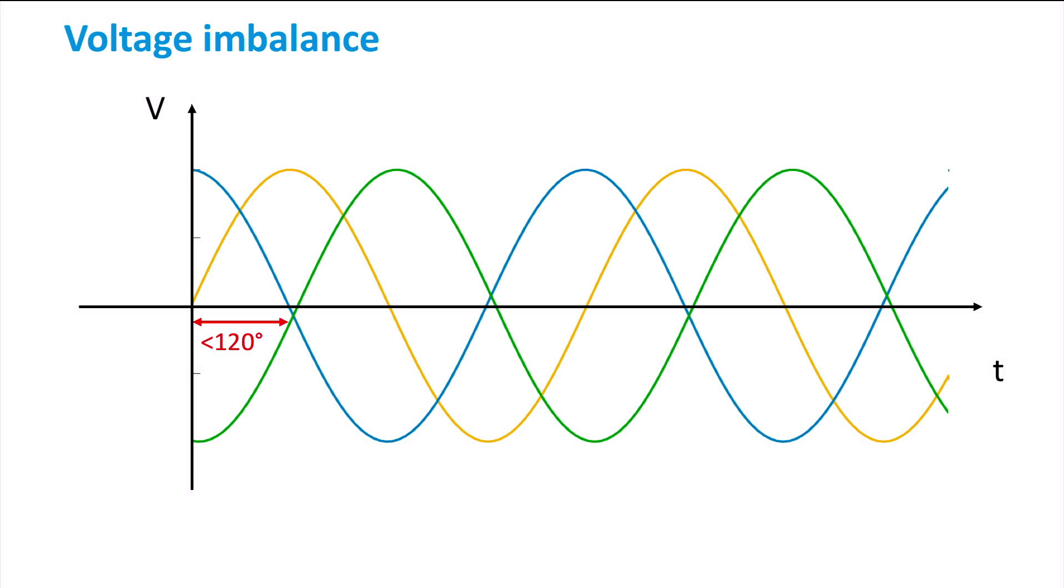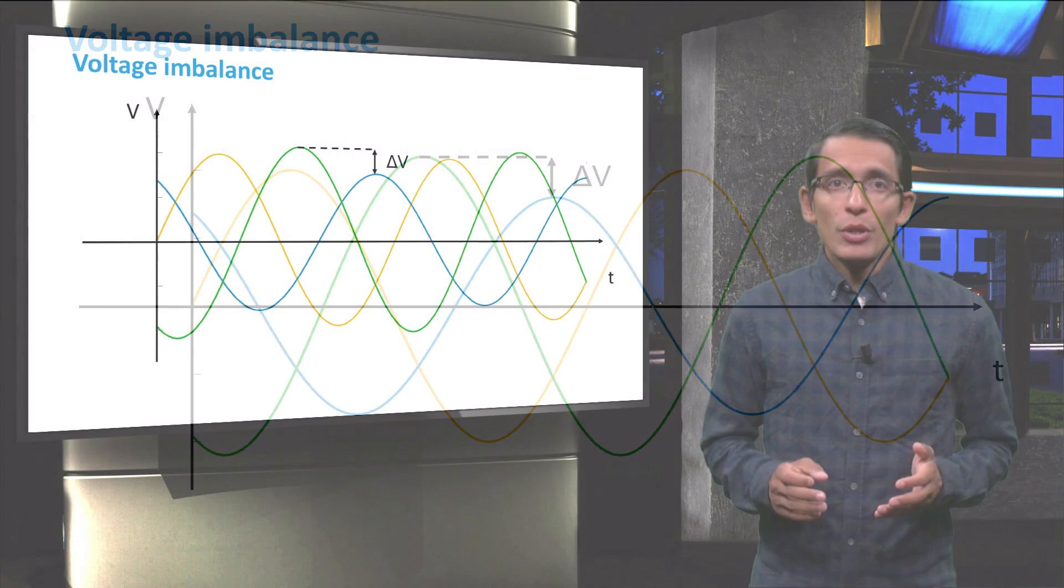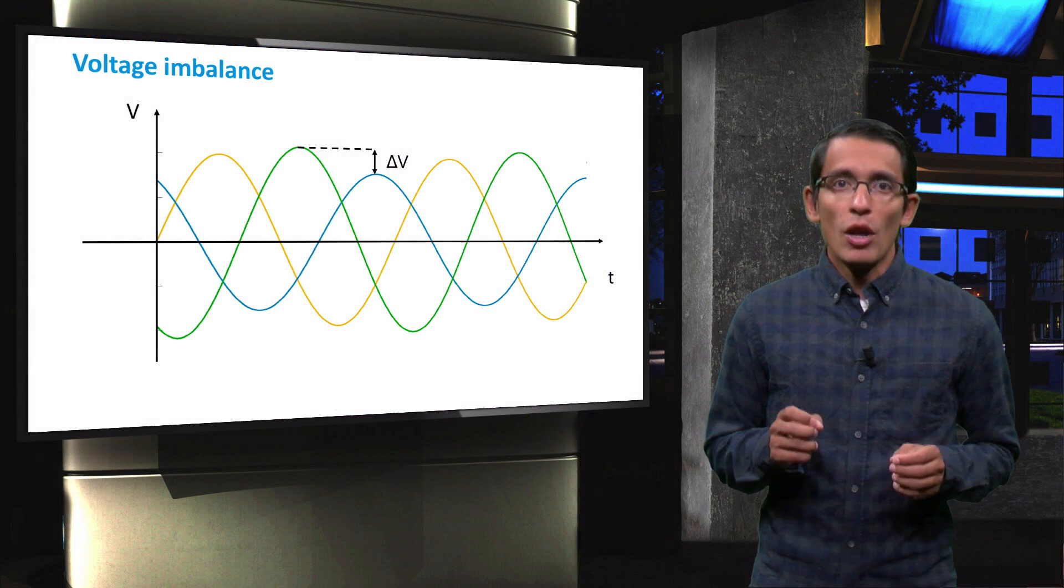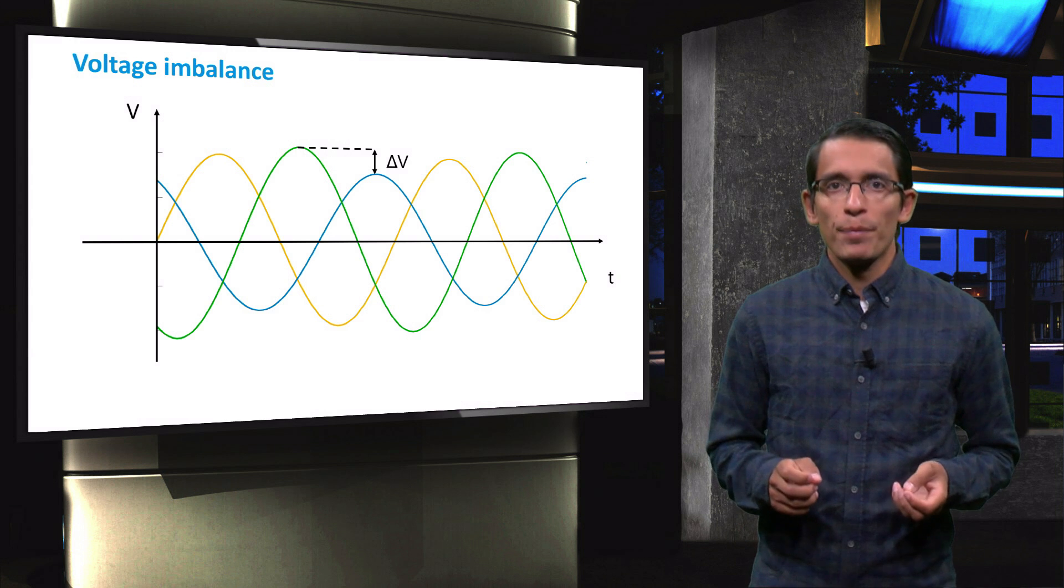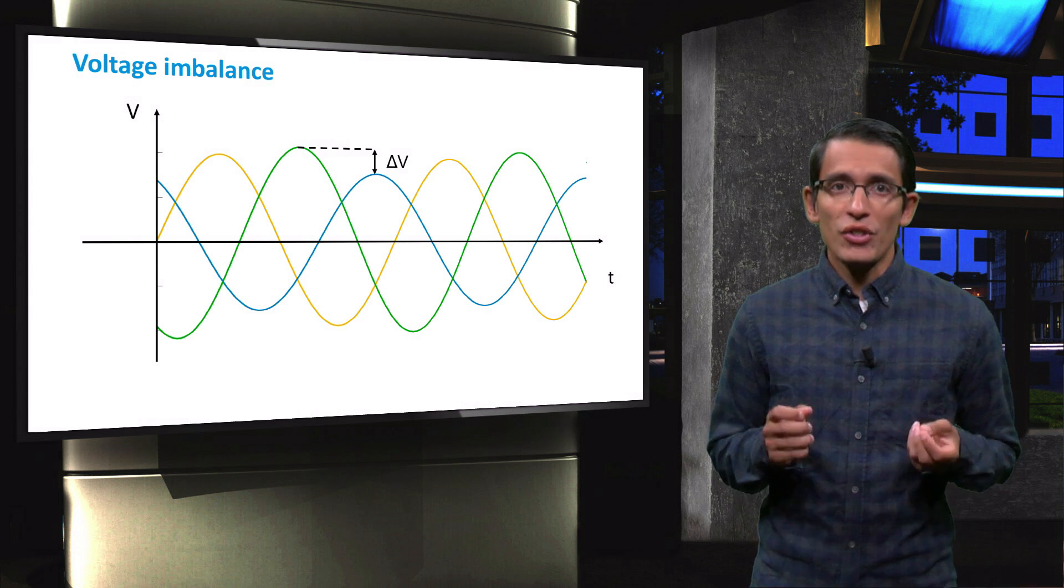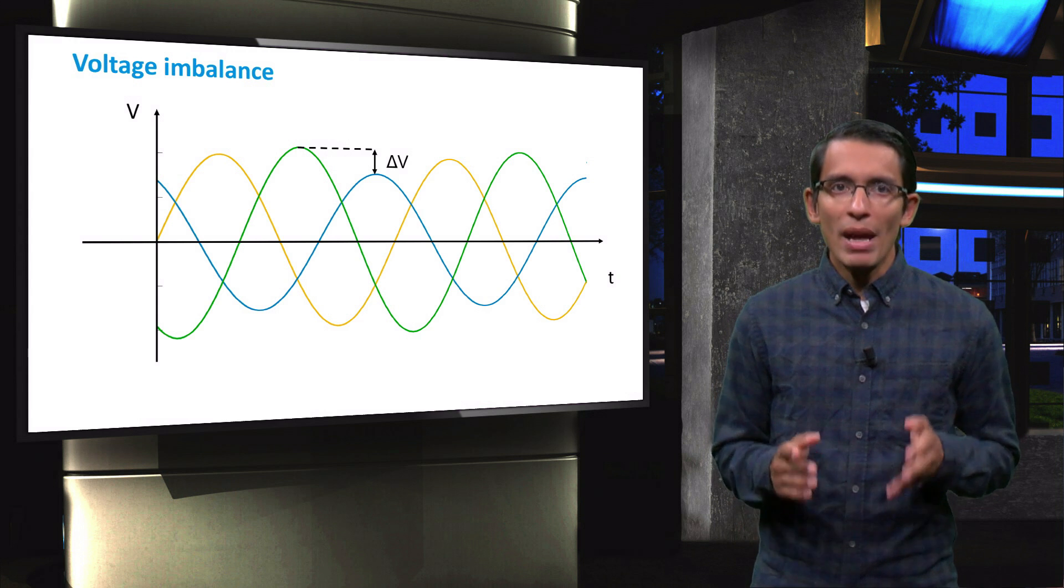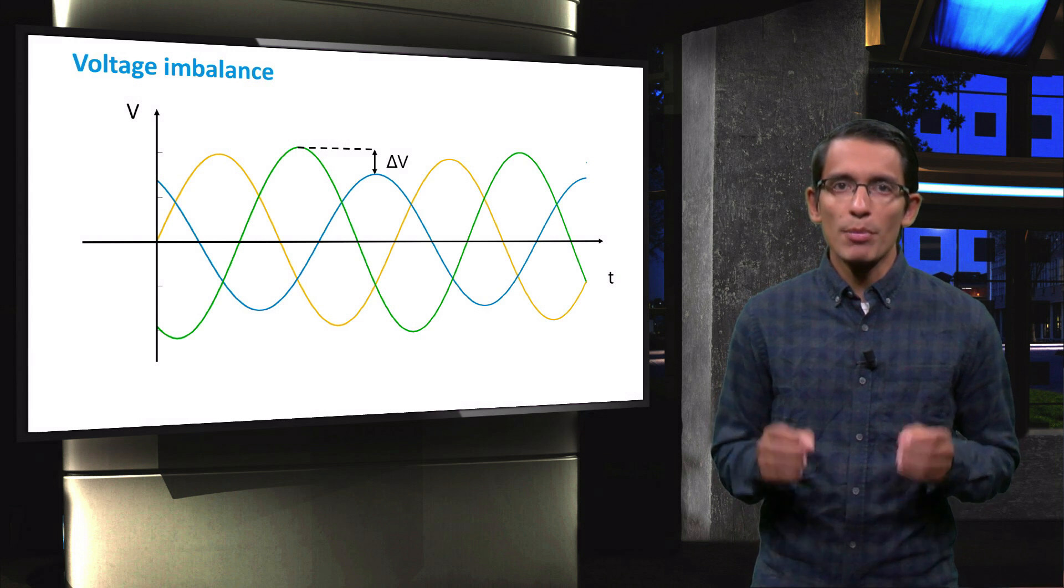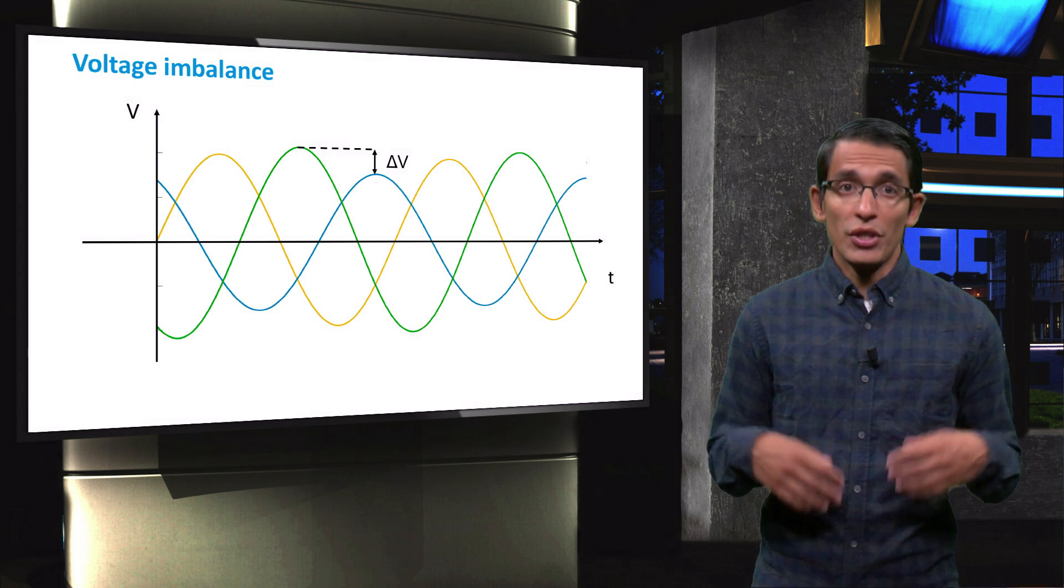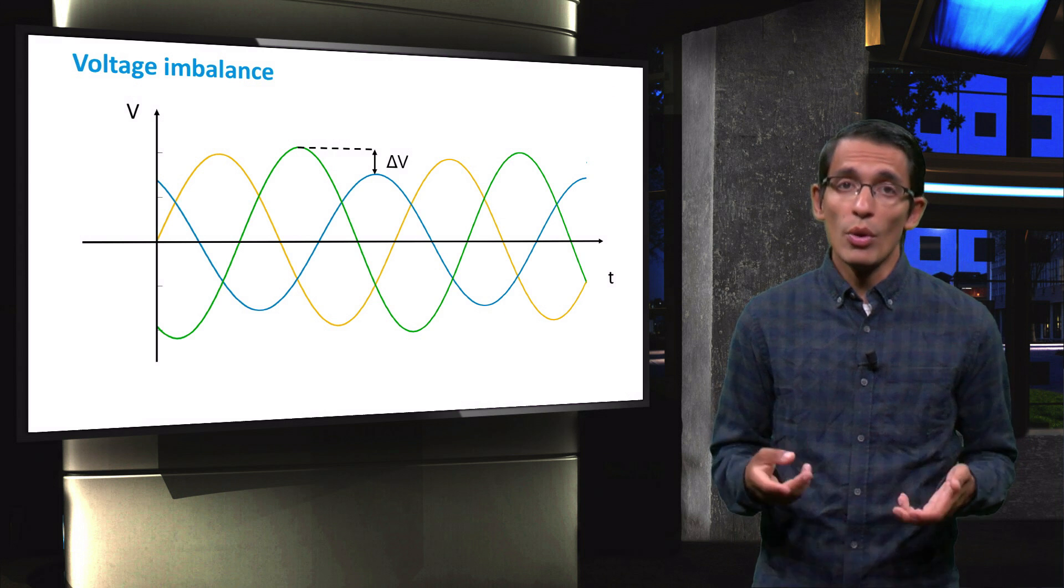Problems will occur if the phase difference changes to a value other than 120 degrees. Also, when the amplitude of the voltage is not the same for all the phases, imbalances can occur. So, if a single-phase generation gets distributed in the three-phase system, this can lead to an imbalance that will have a negative impact on small distributed generators, such as temperature rise of the rotors, noise, and vibration.